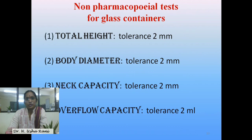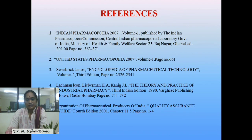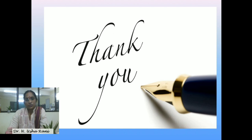The non-pharmacopoeial tests for glass containers include total height, body diameter, neck capacity, and overflow capacity. For all these parameters the tolerance limits are 2 mm and 2 ml respectively. In conclusion, quality control of glass containers forms a very integral part of quality control of packaging materials in pharmaceutical industries. The materials used must not be very expensive, and at the same time they should not affect the quality of the product.